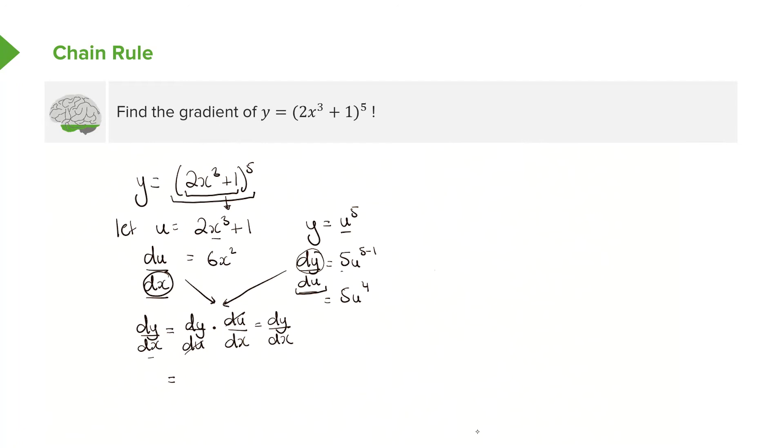Let's just apply this here. So we take our dy/du, which is this term here, so we've got 5u⁴. We multiply it with our du/dx, which is this term here, so that's 6x². We tidy this up, the two numbers can multiply to give us 30u⁴x².